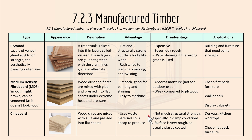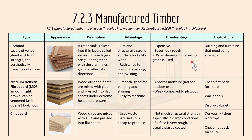Then we have manufactured timbers, 7.2.3. Plywood has layers of veneers laid at 90 degrees for strength and an aesthetically pleasing outer layer. The tree trunk is sliced into thin layers called veneers. It's flat and structurally strong, and the surface looks like wood. But it's expensive and the edges look rough. Plywood is typically used in building and furniture that requires strength.